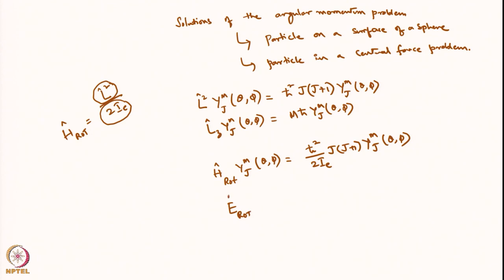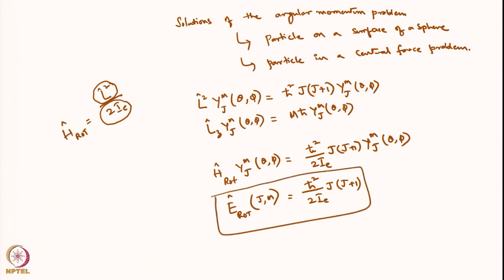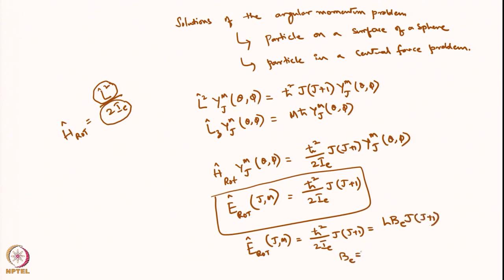The rotational energy E_rotation depends on quantum numbers j and m, but is actually equal to ℏ²/2Ie · j(j+1) — the energy depends only on j, not on m. This can also be written as E_rotation(j,m) = hBe·j(j+1), where Be = h/(8π²Ie) is called the rotational constant.